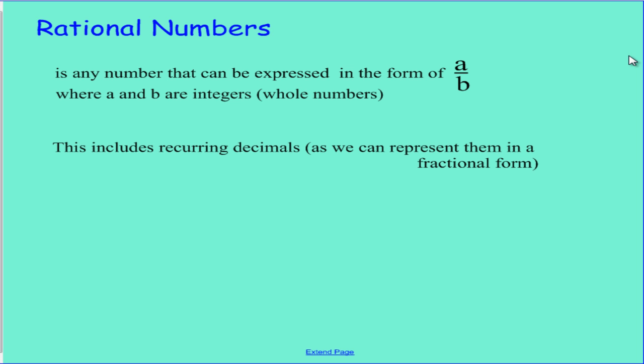A rational number, what is it? Well, a rational number is any number that can be expressed in the form of one whole number over another. What we're going to do is we'll just do some quick examples.